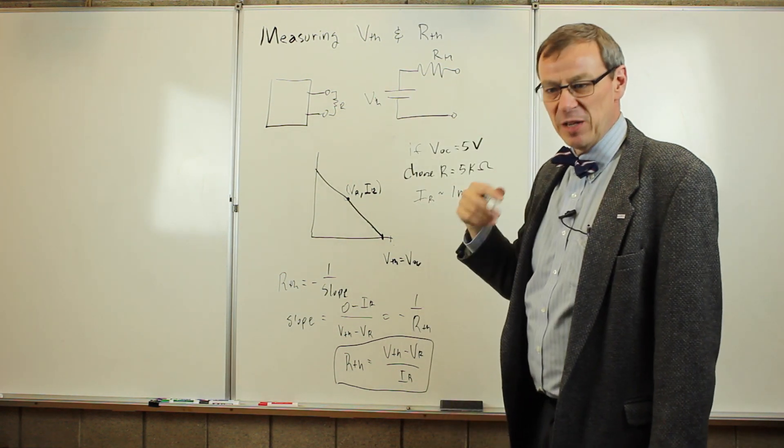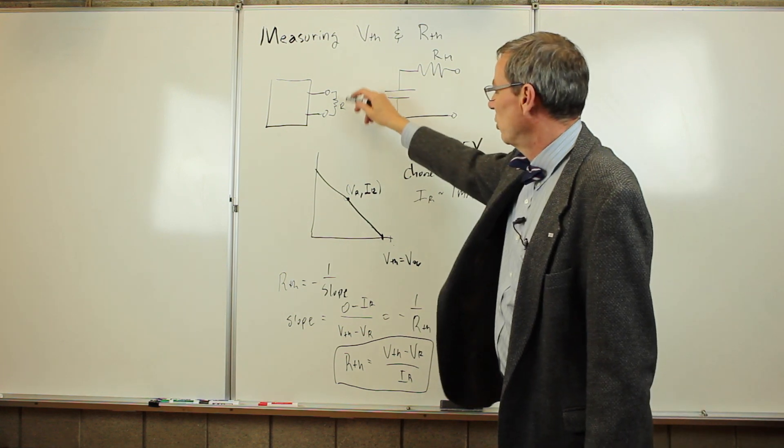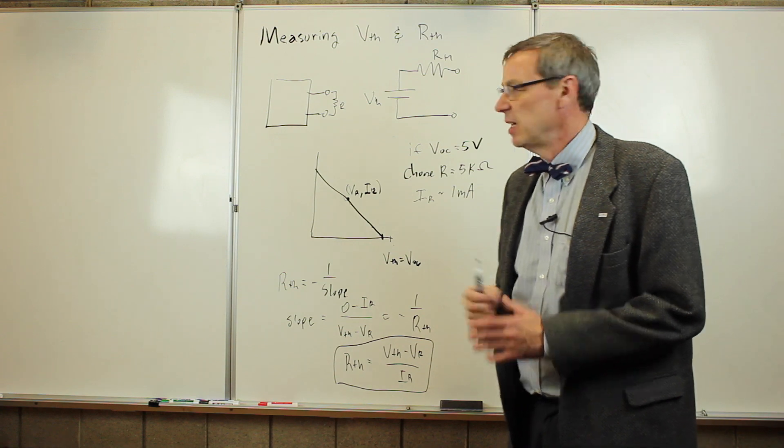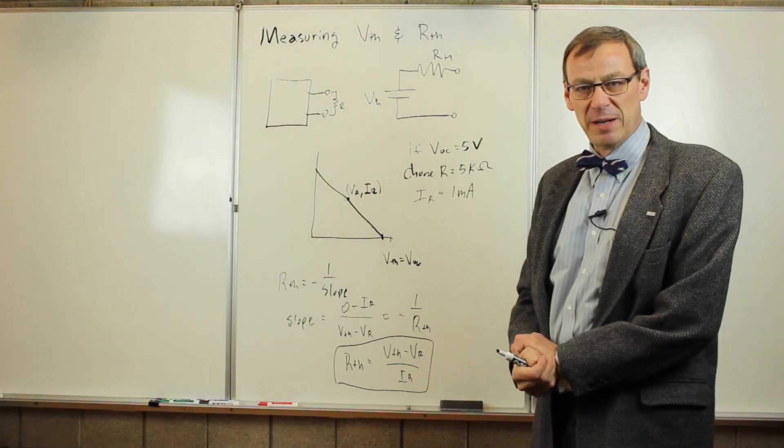Mathematically, we can short circuit. Experimentally, in the lab, we want to be a little more careful so we don't break something so we pick a reasonable resistor and do that. So that's how we measure V Thevenin and R Thevenin in the lab.